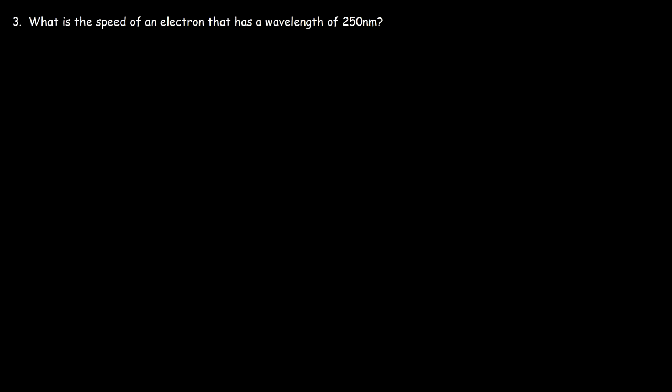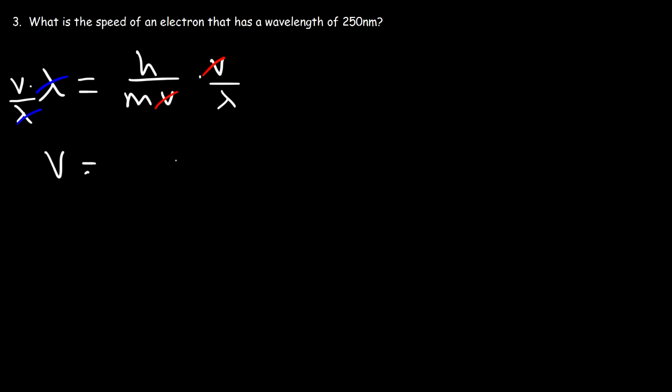That's the wavelength of the electron moving at that speed. Now try this problem: what is the speed of an electron that has a wavelength of 250 nanometers? Starting with the de Broglie wavelength equation and solving for v, we multiply both sides by v and divide both sides by the wavelength. The wavelength cancels on the left and v cancels on the right, so the speed of the particle is Planck's constant divided by the mass times the wavelength.